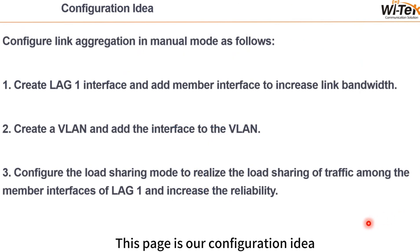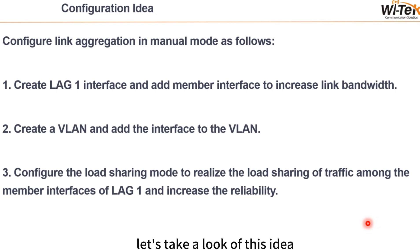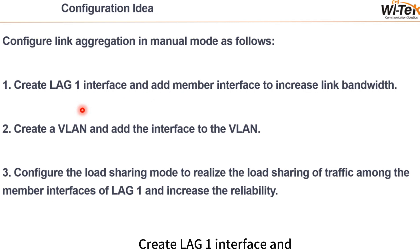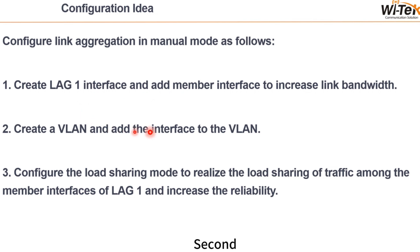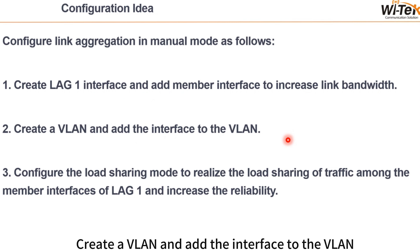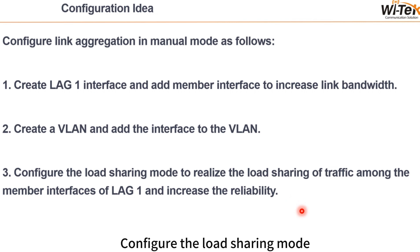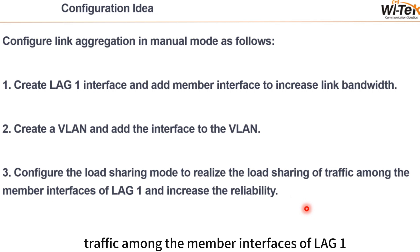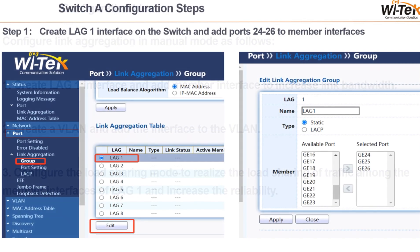This page is our configuration idea, so we will follow this idea to finish all the configuration steps. First, create the LAG1 interface and add member interfaces to increase link bandwidth. Second, create a VLAN and add the interface to the VLAN. Third, configure the load sharing mode to realize the load sharing of traffic among the member interfaces of LAG1 and increase reliability. Now let's start.